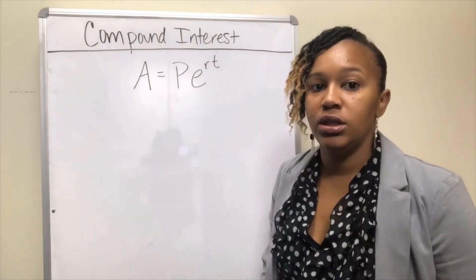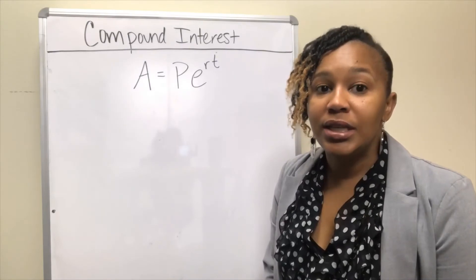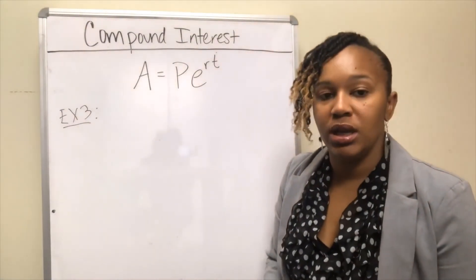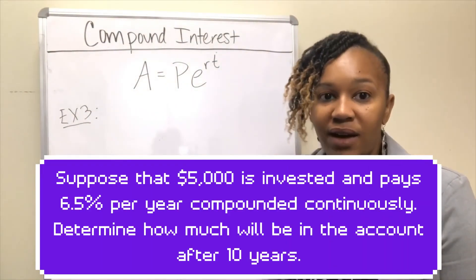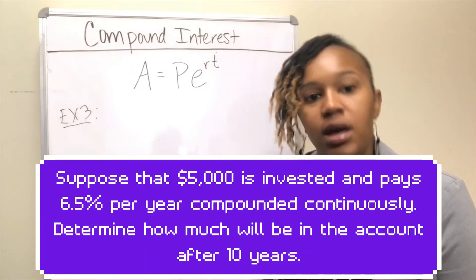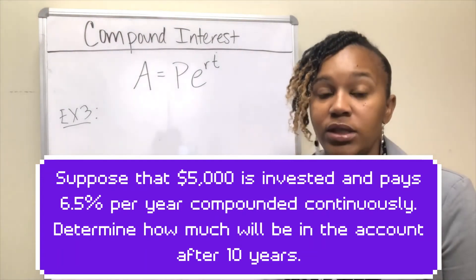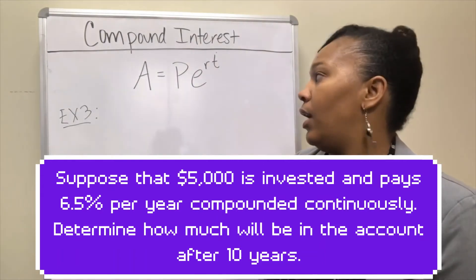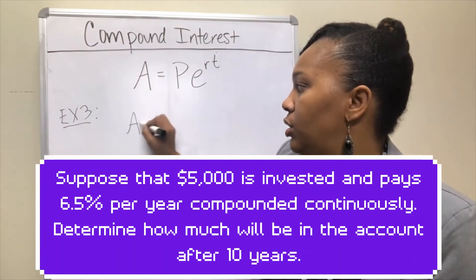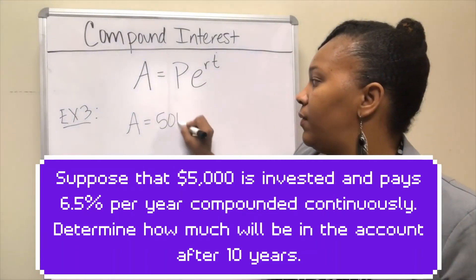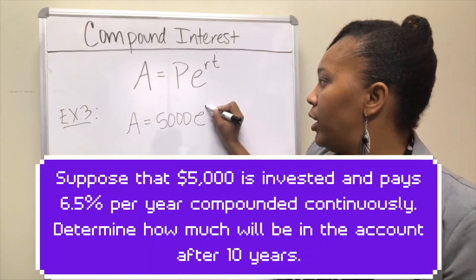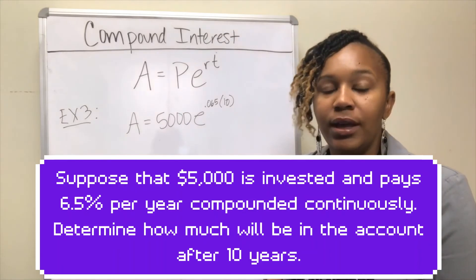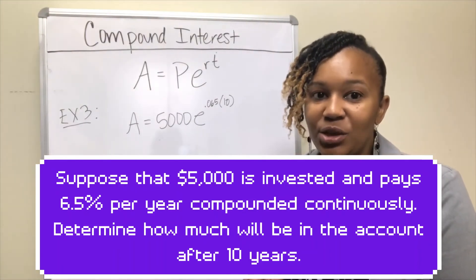This time we're going to do example three. We're going to use the same scenario we used in examples one and two. We're investing $5,000 at 6.5% interest, and this time we're going to leave it in there for 10 years. But our money is going to be compounded continuously. So now let's figure out how much we will have at the end of the 10th year. Our P is still 5,000, our R is still 0.065, and our T is still 10. Again, it's going to be a matter of plugging it in the calculator and making sure you plug it in right.